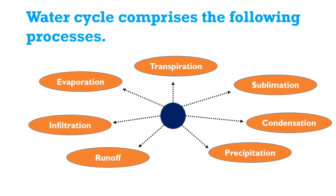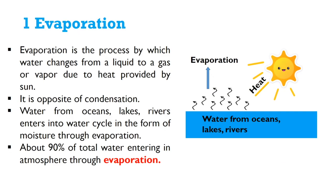The water cycle comprises the following processes: evaporation, transpiration, sublimation, condensation, precipitation, runoff, and infiltration. Evaporation is the process by which water changes from a liquid to a gas or vapor due to heat provided by the Sun. It is the opposite of condensation. Water from oceans, lakes, and rivers enters the water cycle in the form of moisture through evaporation.